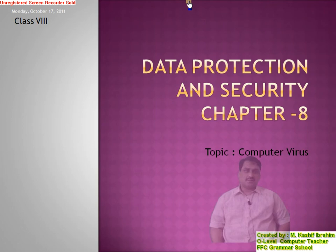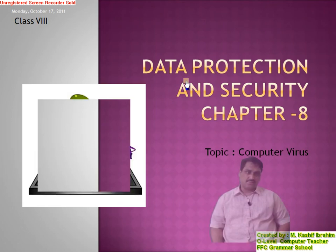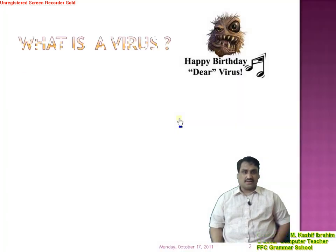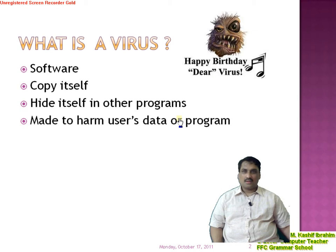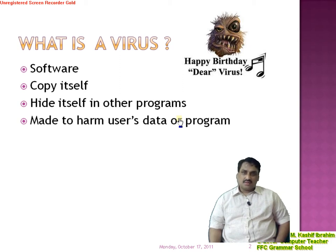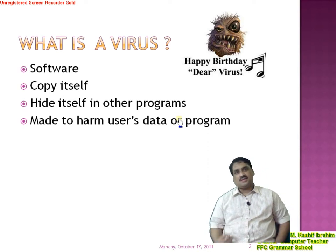The topic of this class is computer viruses, given in chapter 8: Data Protection and Security. A computer virus is a software which can replicate itself and hide itself in other programs. It is made to harm users' programs or data. The main feature of any computer virus is that it can copy itself and hide itself.